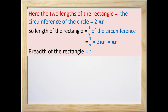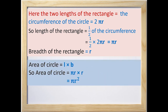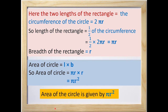The two lengths of the rectangle together equal the circumference of the circle, 2πr. So the length of the rectangle equals half of the circumference, which is πr, and the breadth equals r. Therefore, area of the circle = length × breadth = πr × r = πr². The area of the circle is equal to πr².